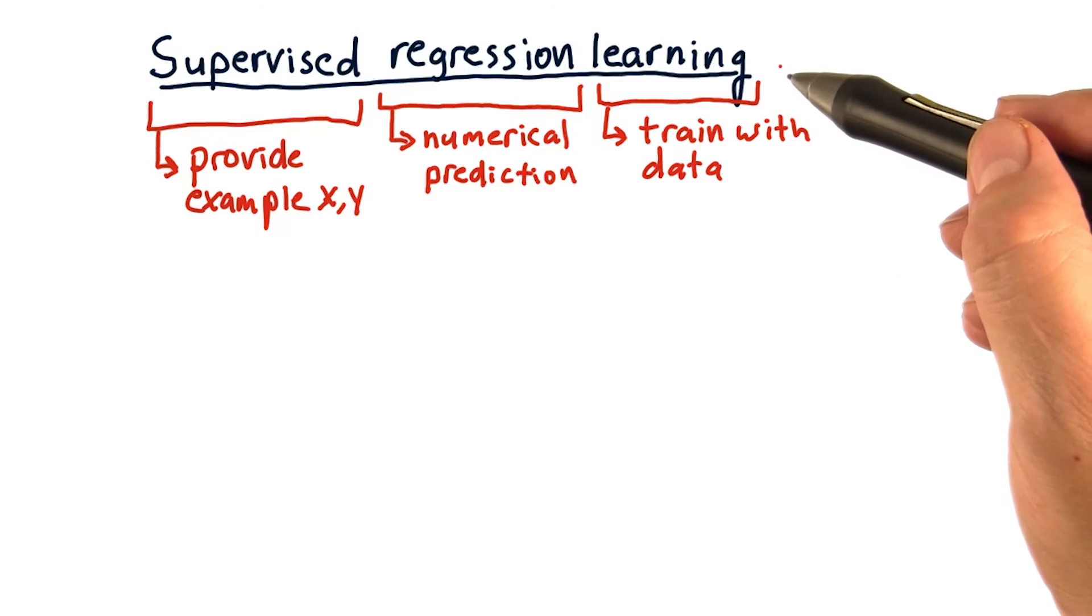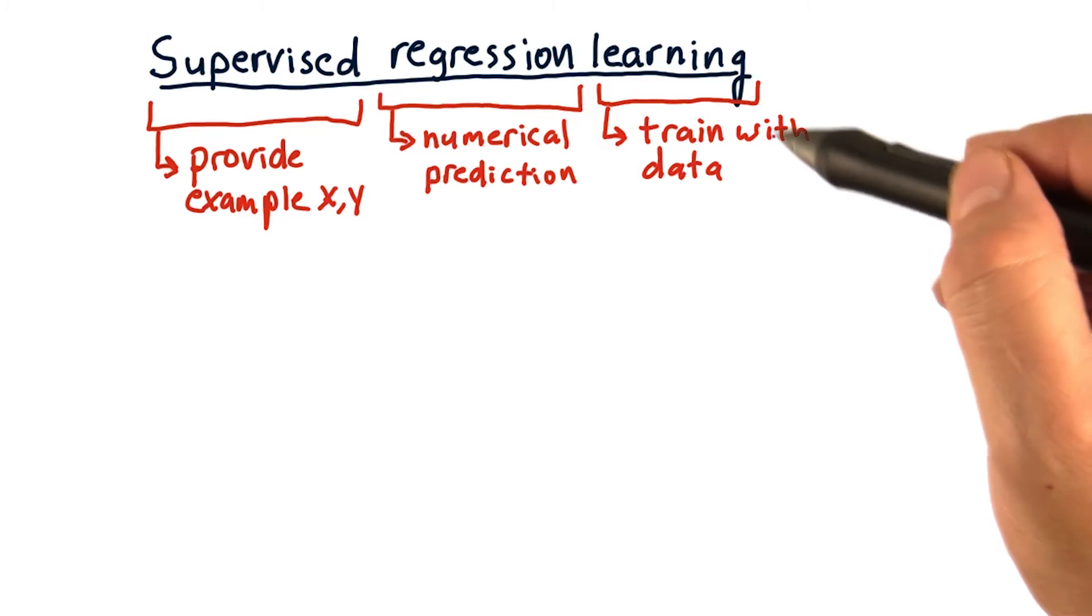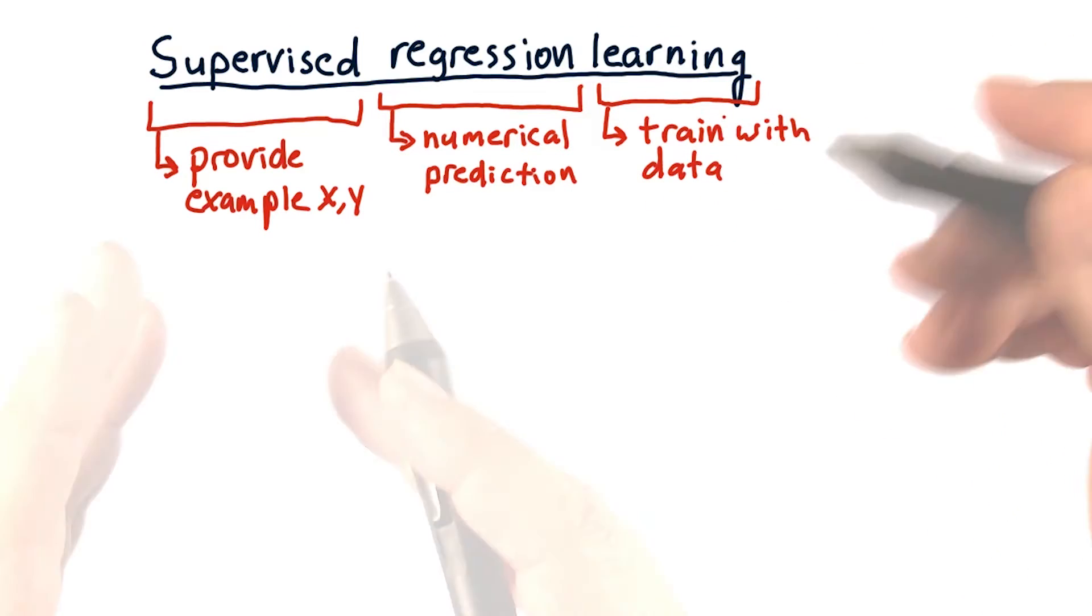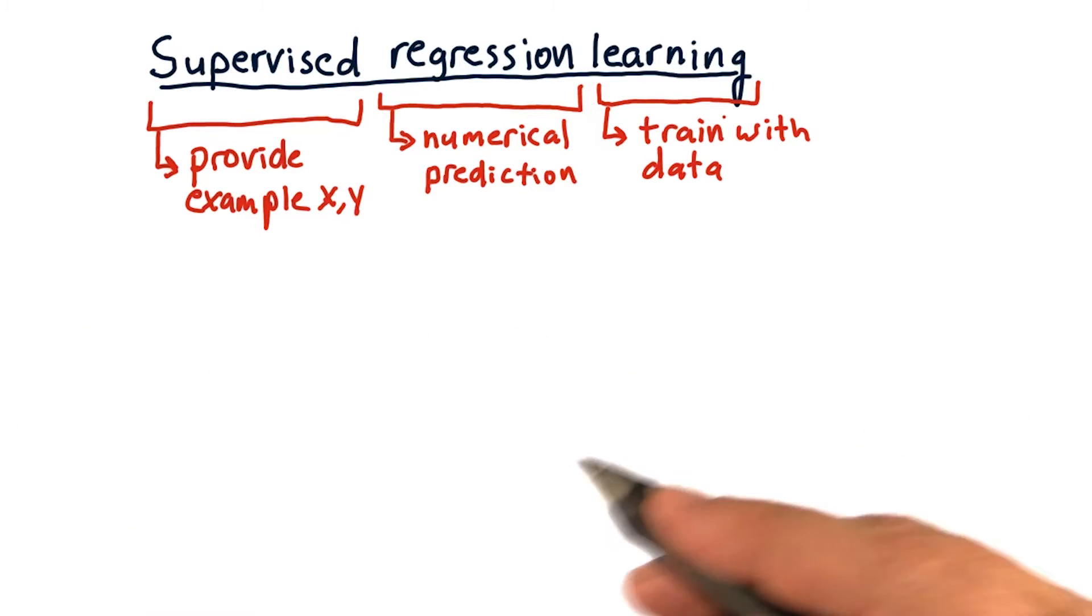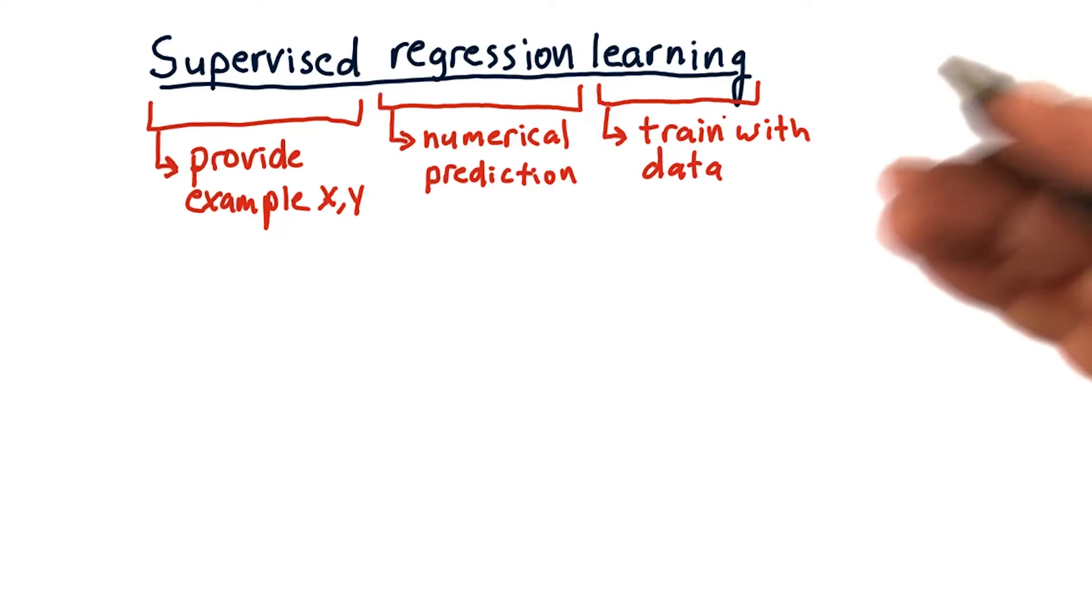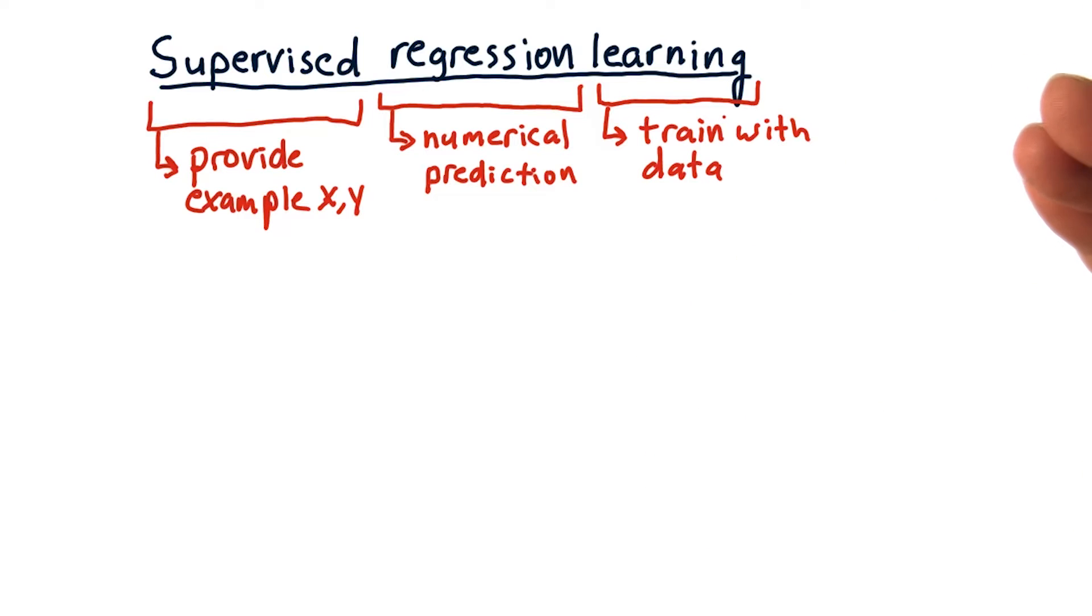Finally, when we say learning, what we mean is we are training with data. In this class, we're taking historical stock data and training the system to make a prediction about the future, usually about price.